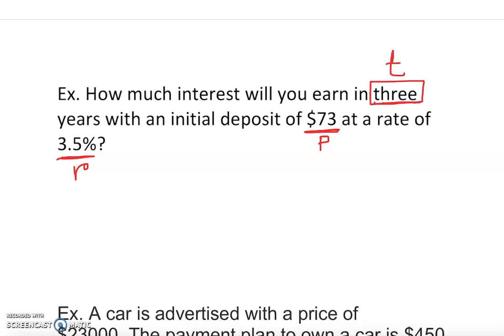This is the time T. They're asking how much interest, so I equals PRT. Notice we already have everything given - that was our P, that was our R, and that is our T. Everything was given, so we just plug it in. P is 73.